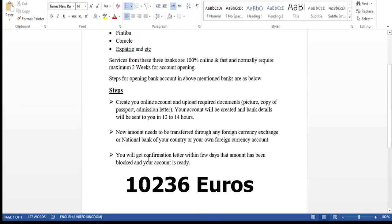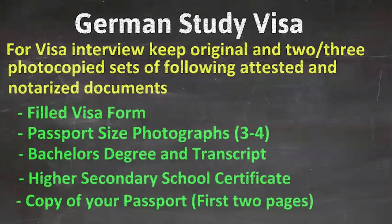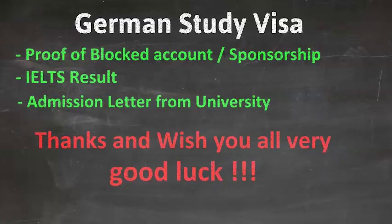Now the big day comes — you go to the embassy or consulate for your visa interview. Bring one original set of all documents and at least two or three photocopied sets, as the visa officer may ask for extras. Documents should be attested. You will need: the filled visa form (downloadable from the German embassy website of your country), three to four passport-size photographs, your bachelor degree and transcript, higher secondary school certificate, copy of your passport (first two pages), and proof of your blocked account or a sponsorship letter.